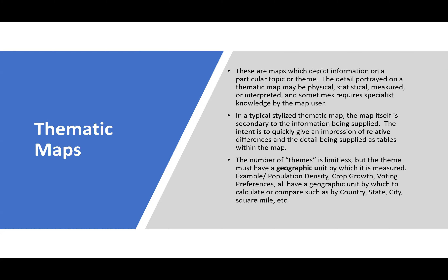Now, thematic maps are maps which depict information on a particular topic or theme. The detail portrayed on a thematic map may be physical, statistical, measured, or interpreted, and sometimes requires specialist knowledge by the map user. For example, statistical information — which is why a basic statistics course is a prerequisite before GIS methods. If you're showing percentage population change over 10 years, you need background in statistics to convey that through your maps.